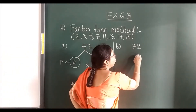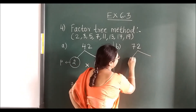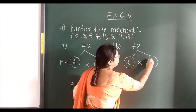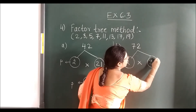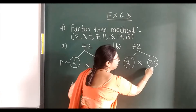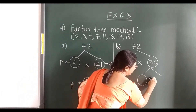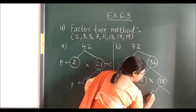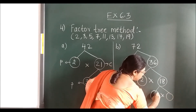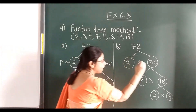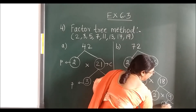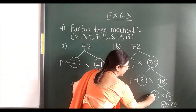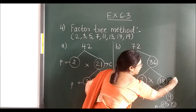See 72. Split 72 into 2: 2 and 36. Then split 36 into 2: 2 and 18. Again, 18 can be split into 2: 2 and 9. Again split 9: 3 and 3. All these outside numbers are prime numbers — 2, 2, 2, 3, 3. You can see these numbers are prime numbers, and 72 is the composite number.